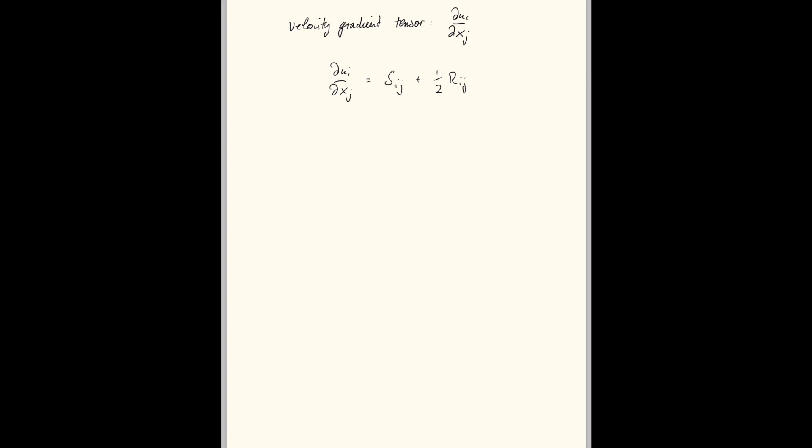Where sij is given as a half dui dxj plus duj dxi, and rij is simply given by dui dxj minus duj dxi. If you substitute these two expressions into equation 1 up here, you end up with simply dui dxj.